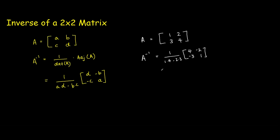So, we can simplify this further by simplifying the determinant of A. So, 1 times 4 is 4, minus 2 times 3 is 6, so 4 minus 6, so negative 2.